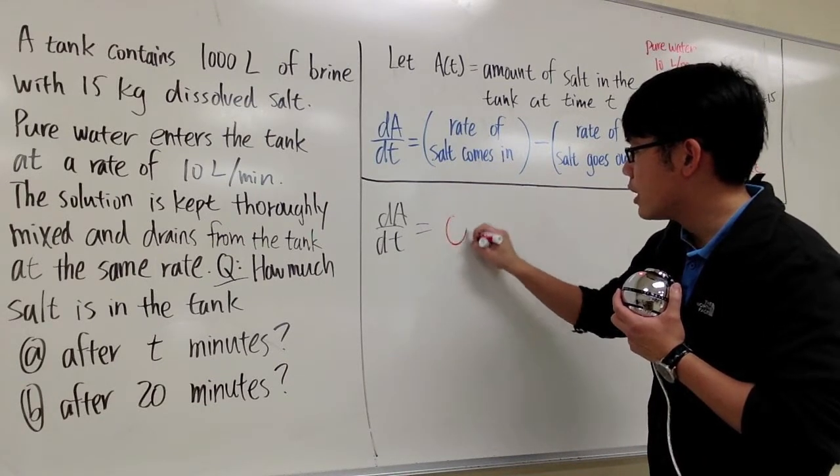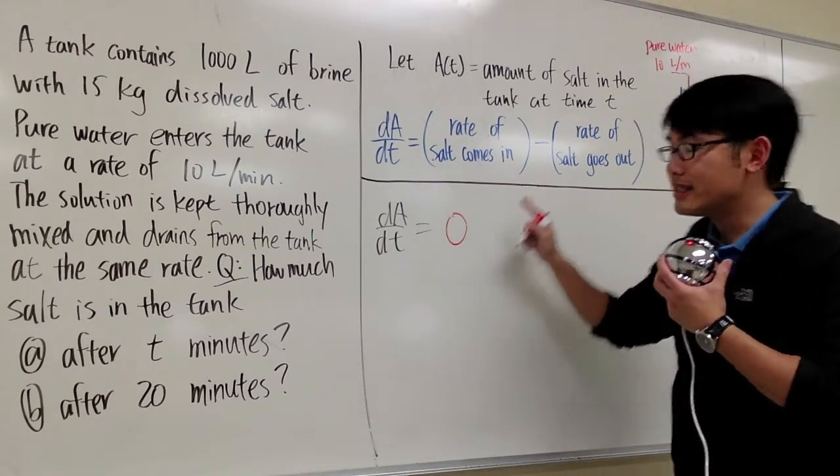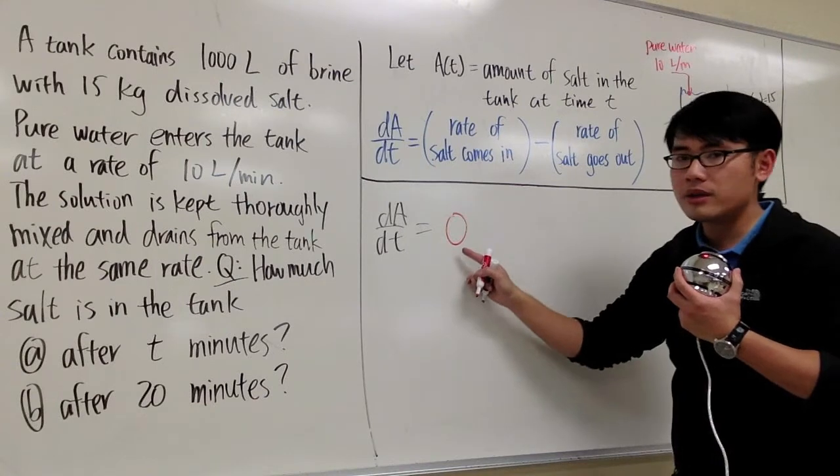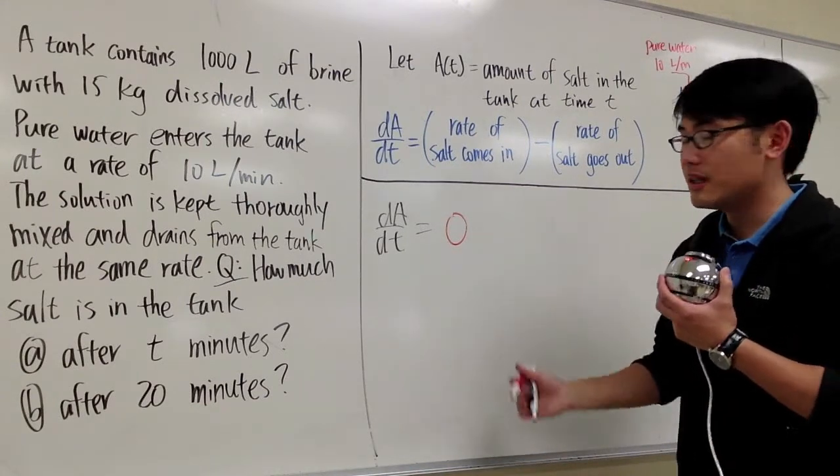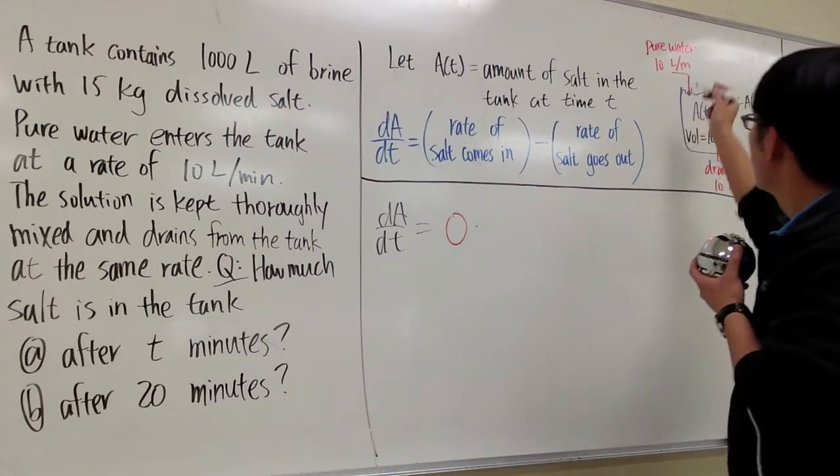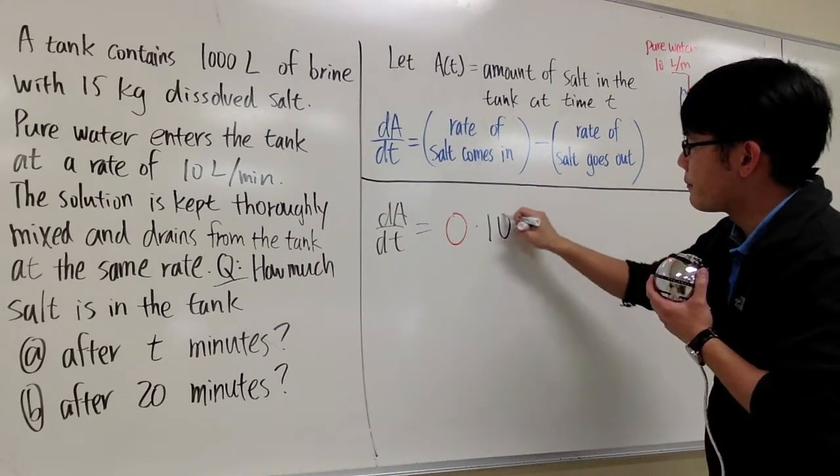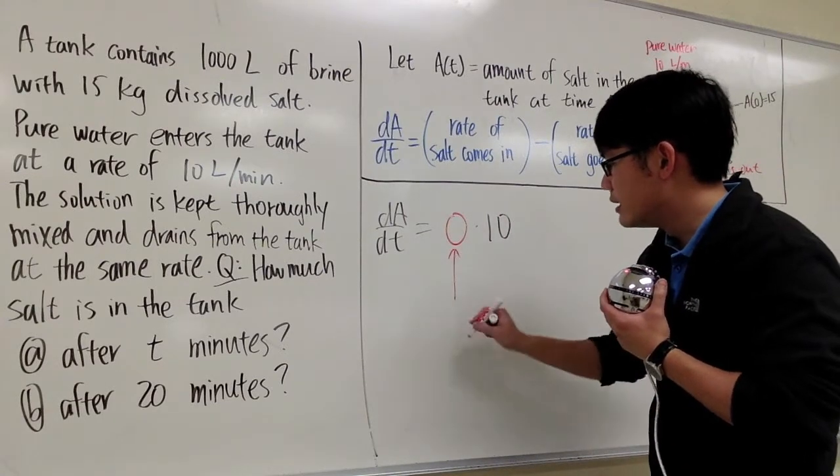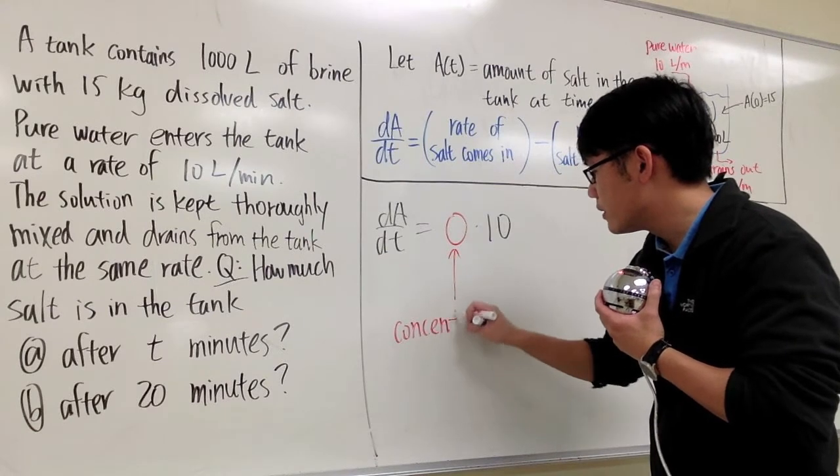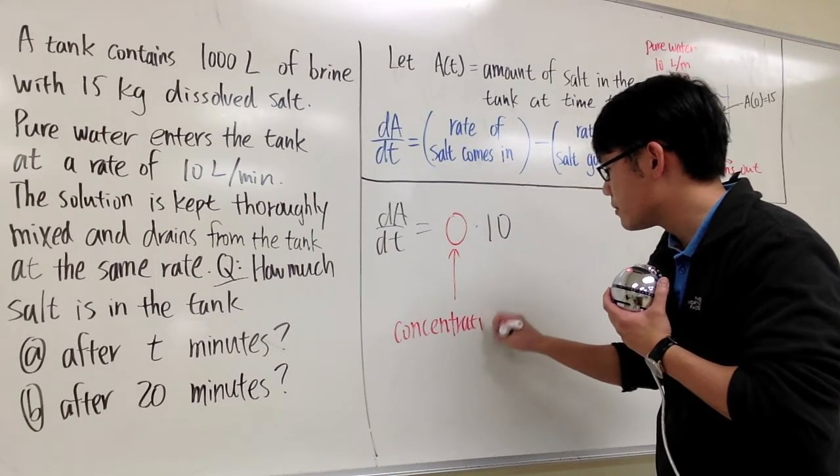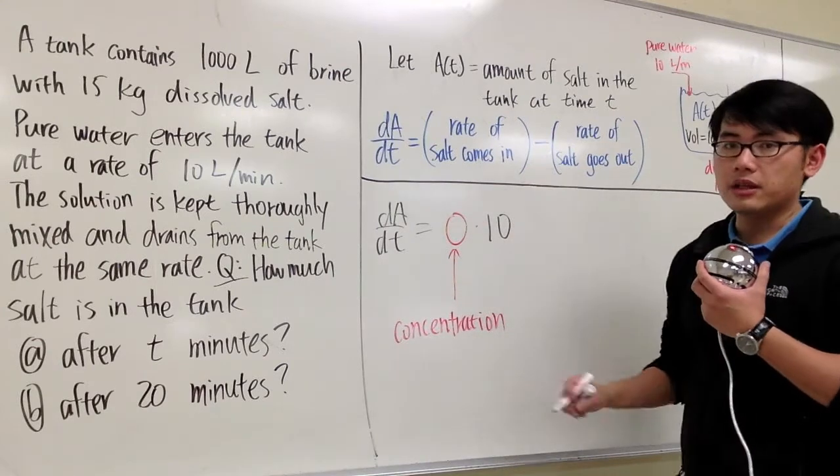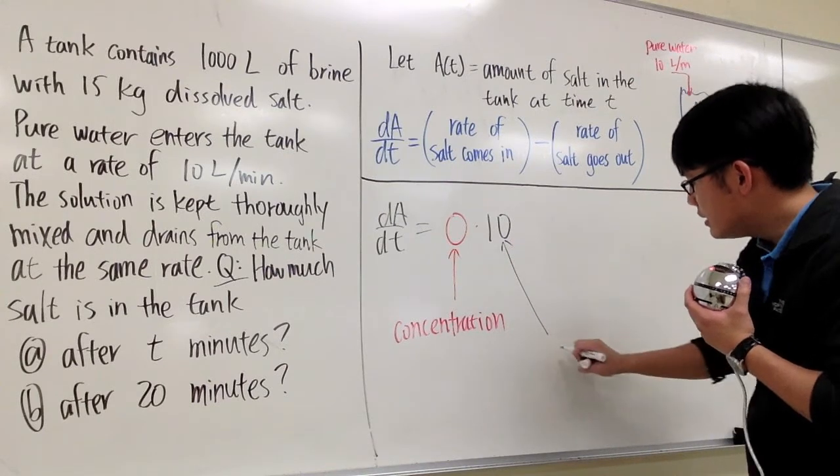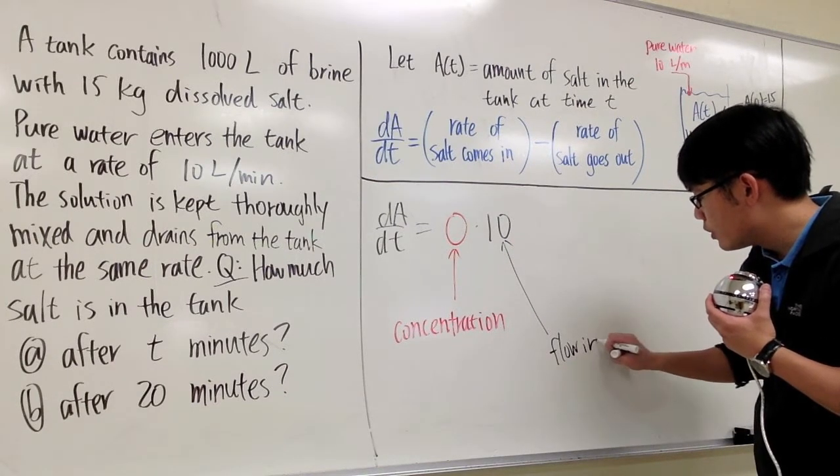Typically, I will write down zero because that's for pure water. It contains no salt. The concentration of pure water is just zero because it has no salt. The salt times the 10. I will actually write down zero times 10 for you. And once again, this right here stands for the concentration of the salt that goes in, which is zero because we have pure water. And then this right here is the flow in rate.